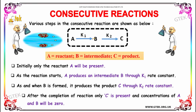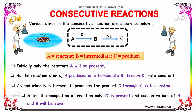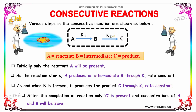Initially, only the reactant A will be present. As the reaction starts, A produces the intermediate B through the K1 rate constant. As and when B is formed, it forms the product C through the K2 rate constant. After the completion of the reaction, only C is present, and the concentrations of A and B will become zero.